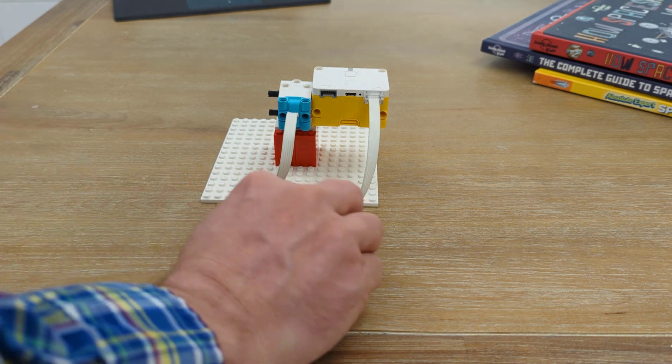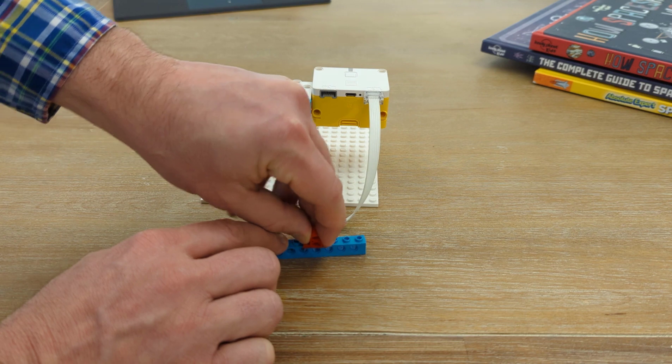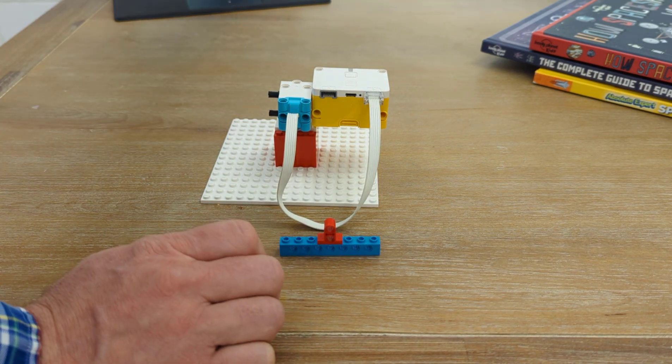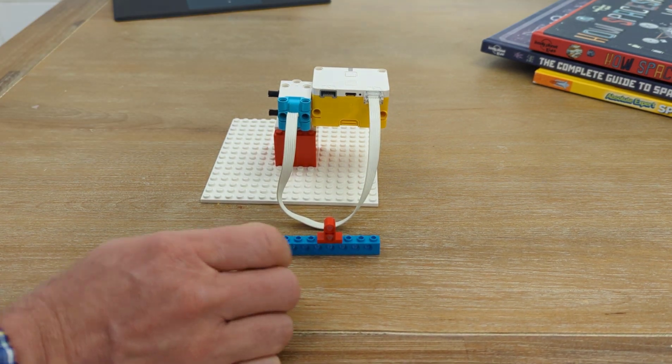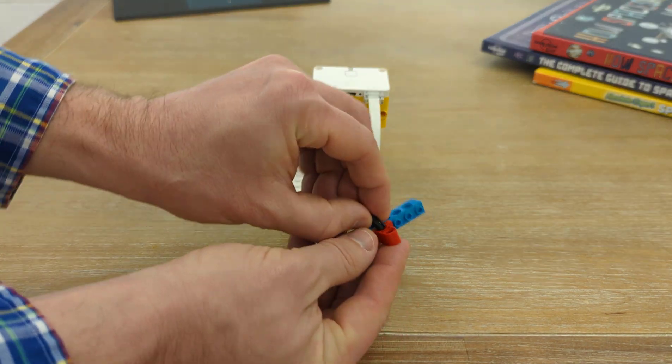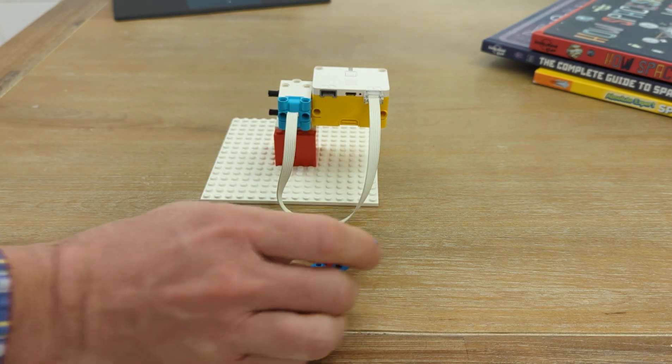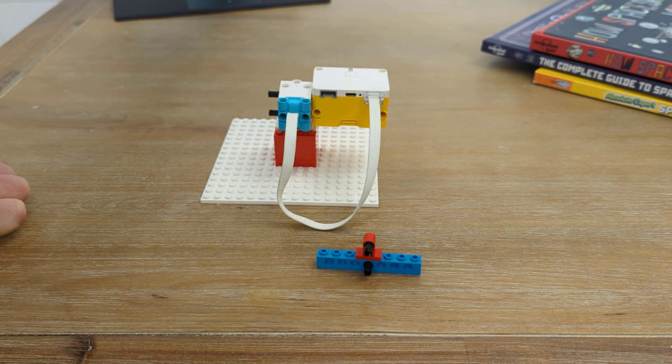And now I'm going to need to build an arm so that we can get some good rotations going. And this build is going to take a lot of Technic connector pieces because we are going to want to secure everything together so that it holds up as it spins.